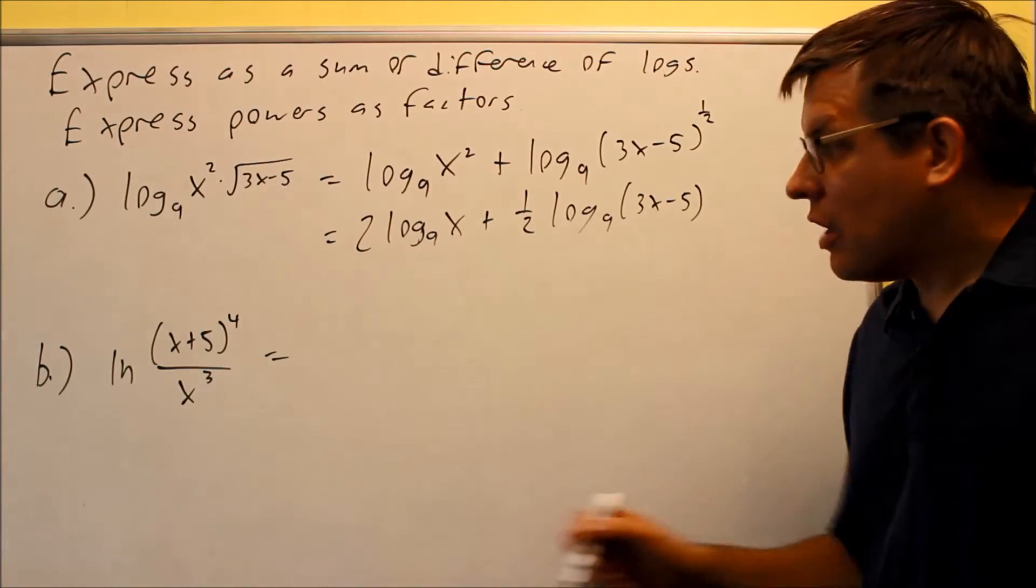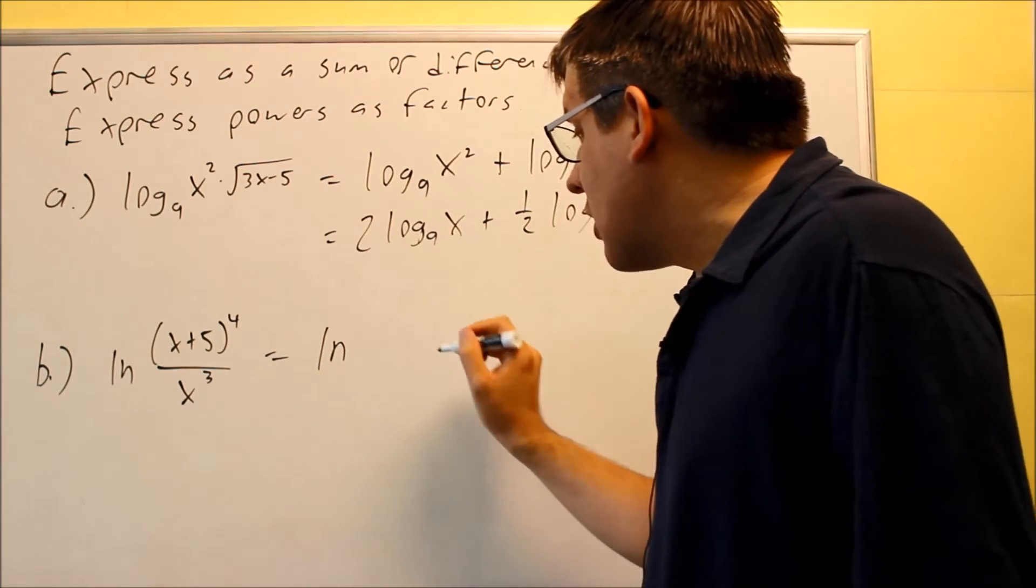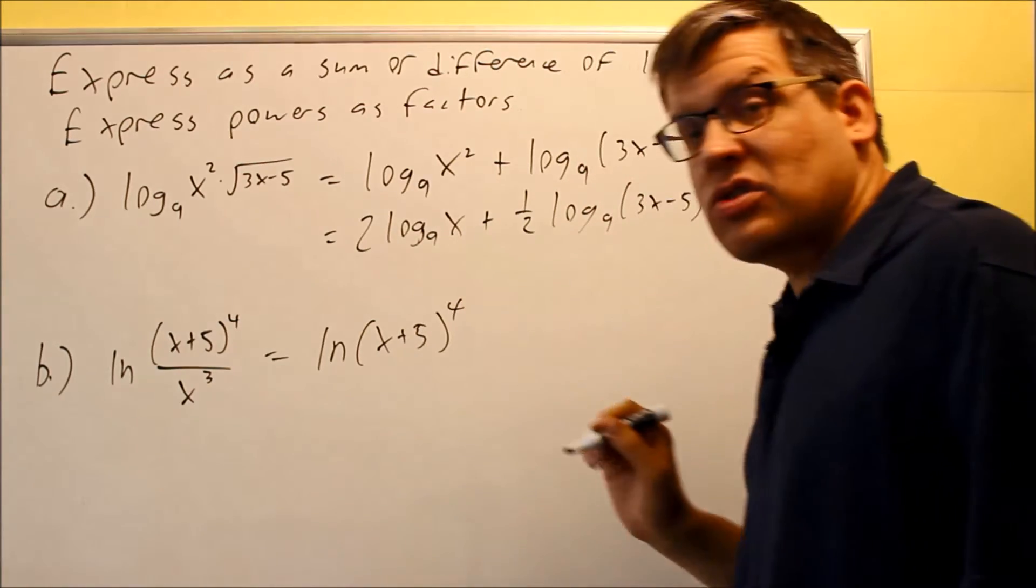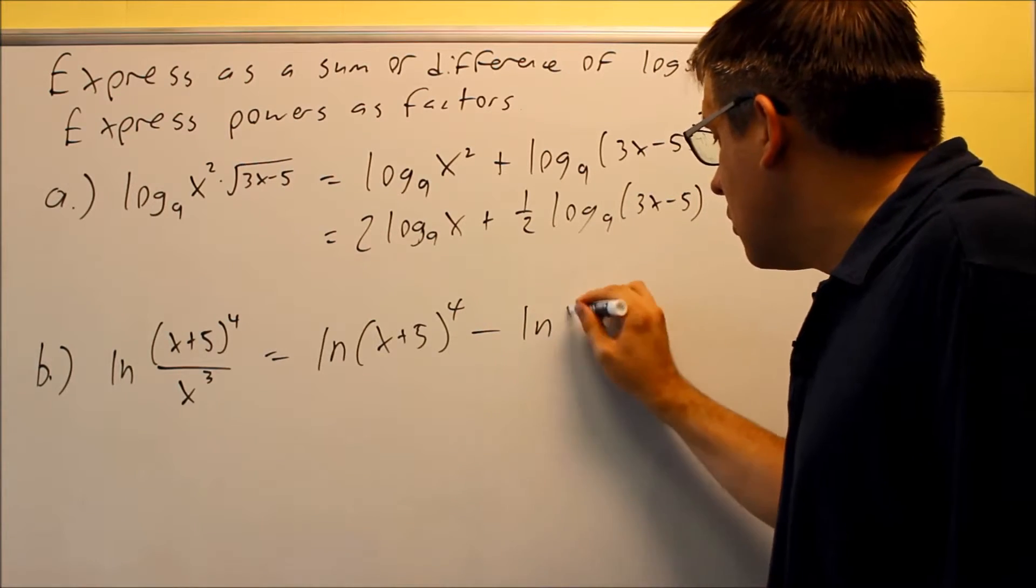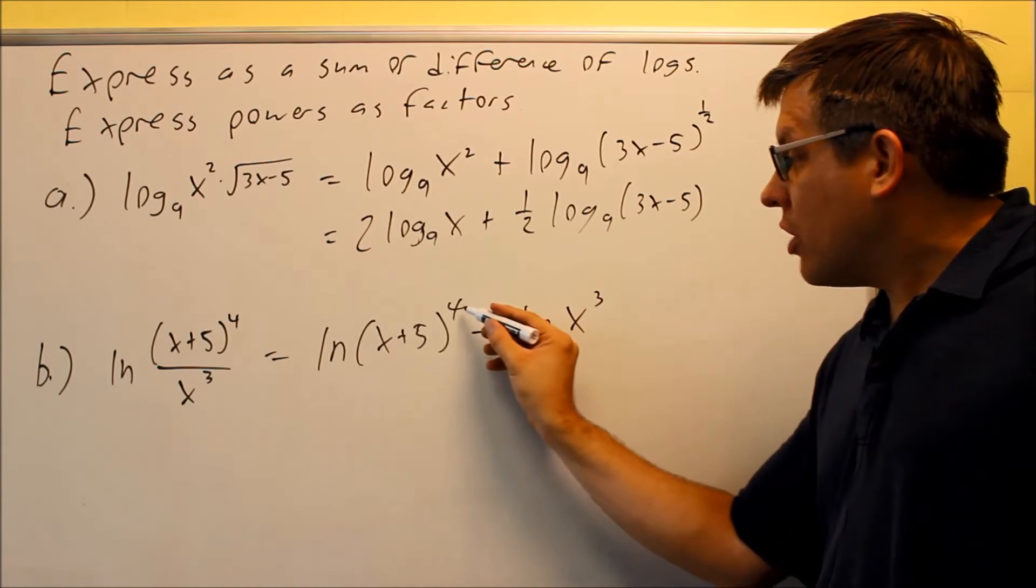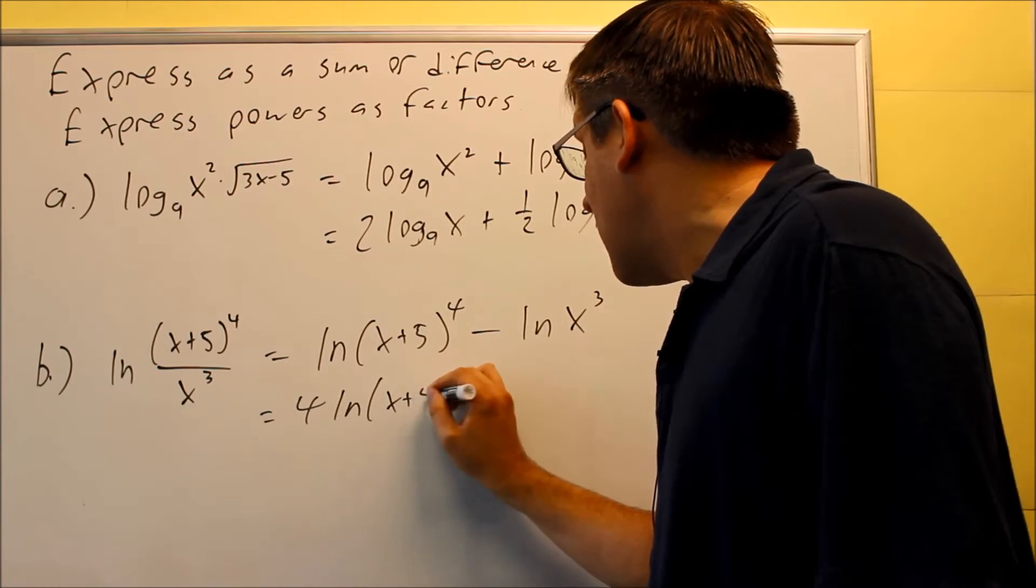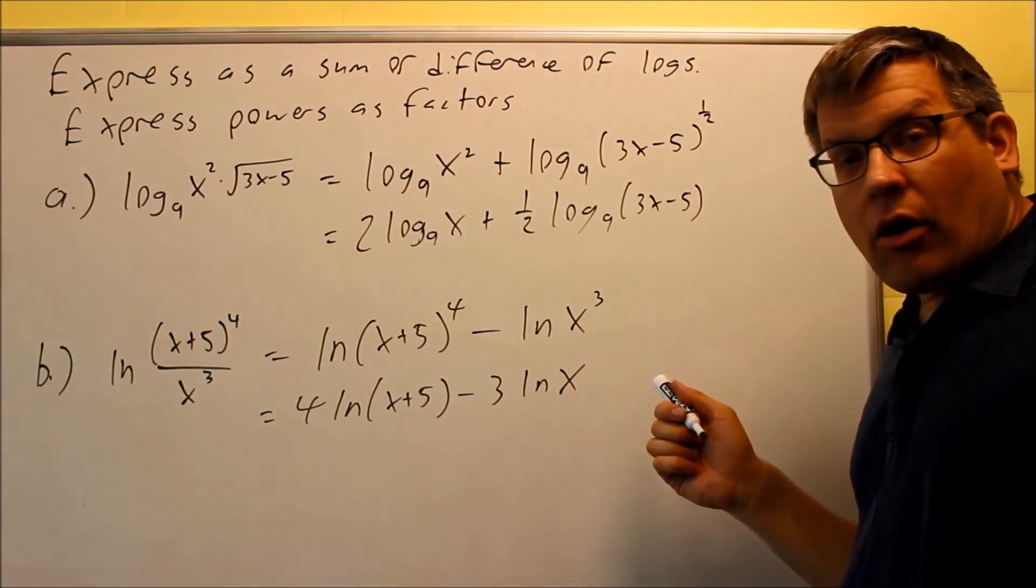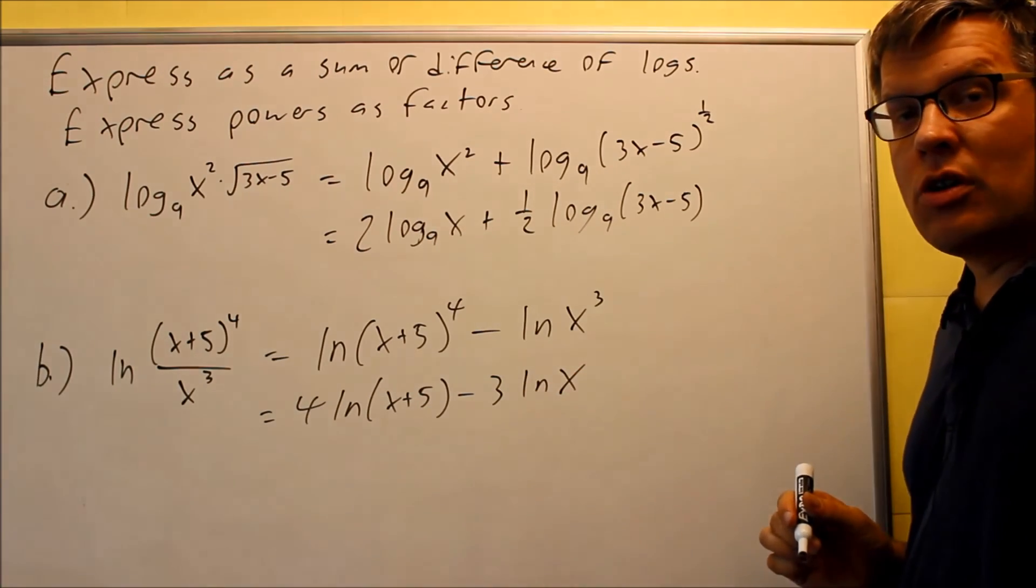We'll do the same thing for part b. Now part b has a division happening in it, and so we're going to use our natural log, that's ln, and we're actually using rule number seven in this case. So the division is going to turn into subtraction. So now I turn that into a minus sign there, and I'm going to bring these powers down in front. So the four will come down, four ln x plus five minus three ln x. We've written our powers as factors. It's being multiplied by each of these, so that would be as far as we can go with our answer.